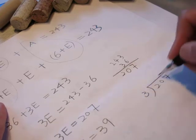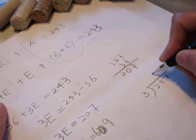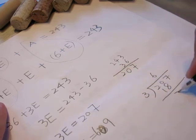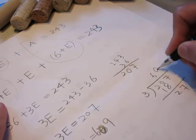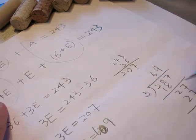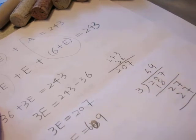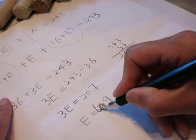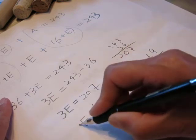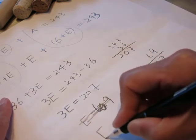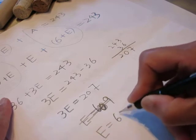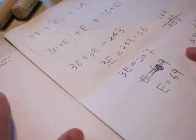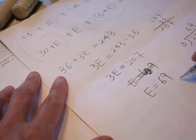And E equals 39. How do we get this? 207 divided by 3. Oh no, no, sorry. 3 times 6 is 18, 29... 3 times 9 makes 27, so 27. Emily's weight is 39, sorry I made a mistake, so E equals 69.